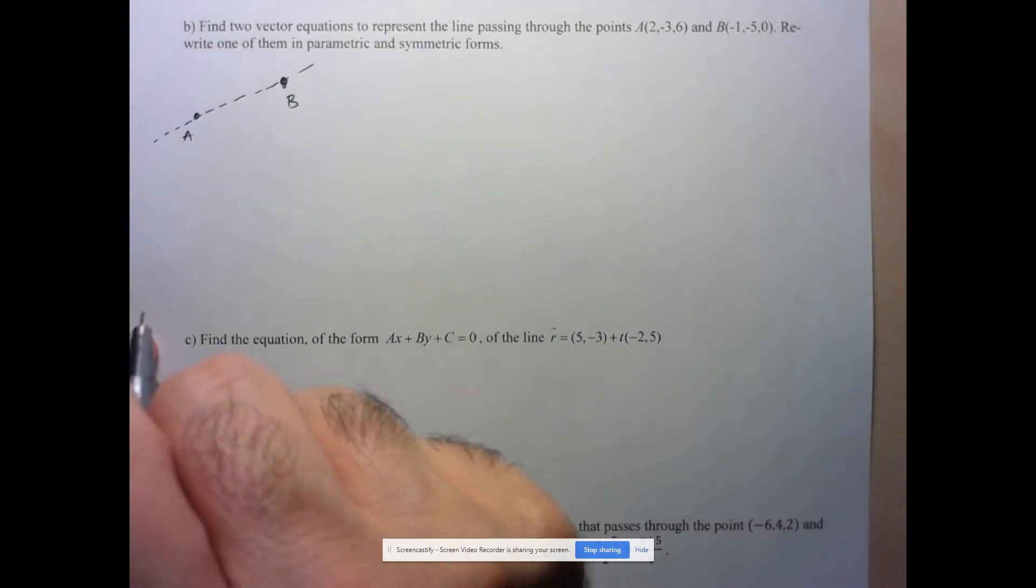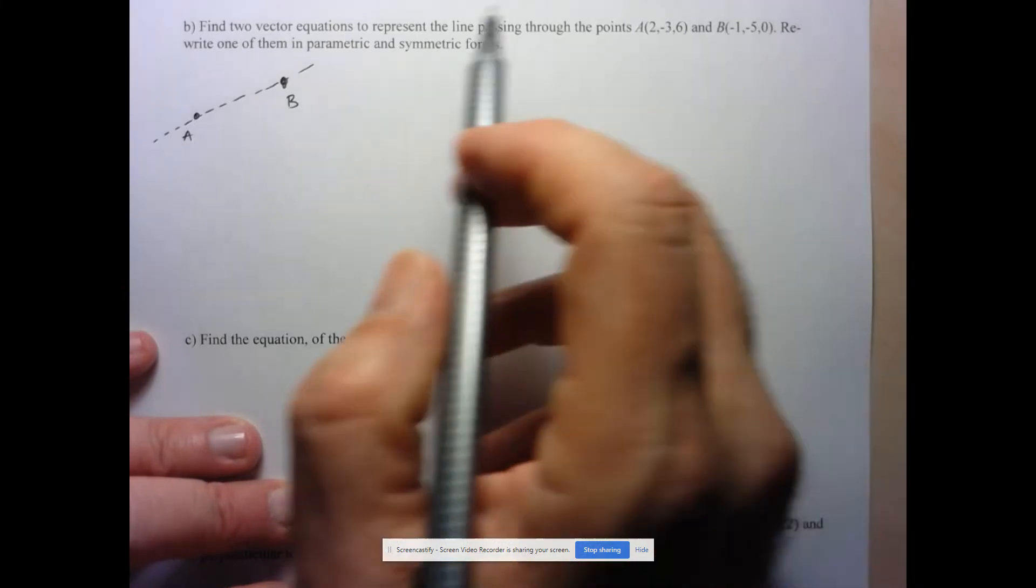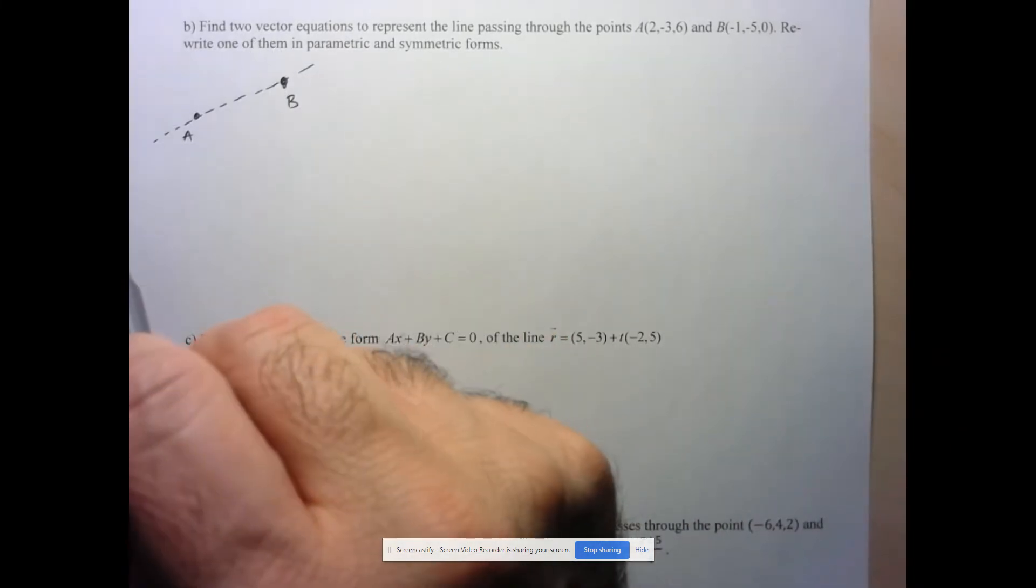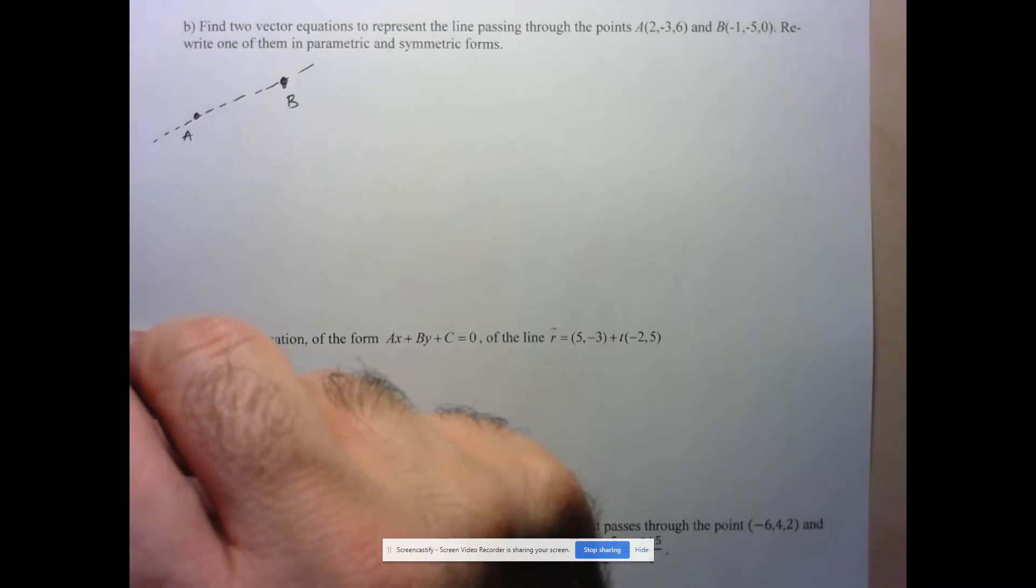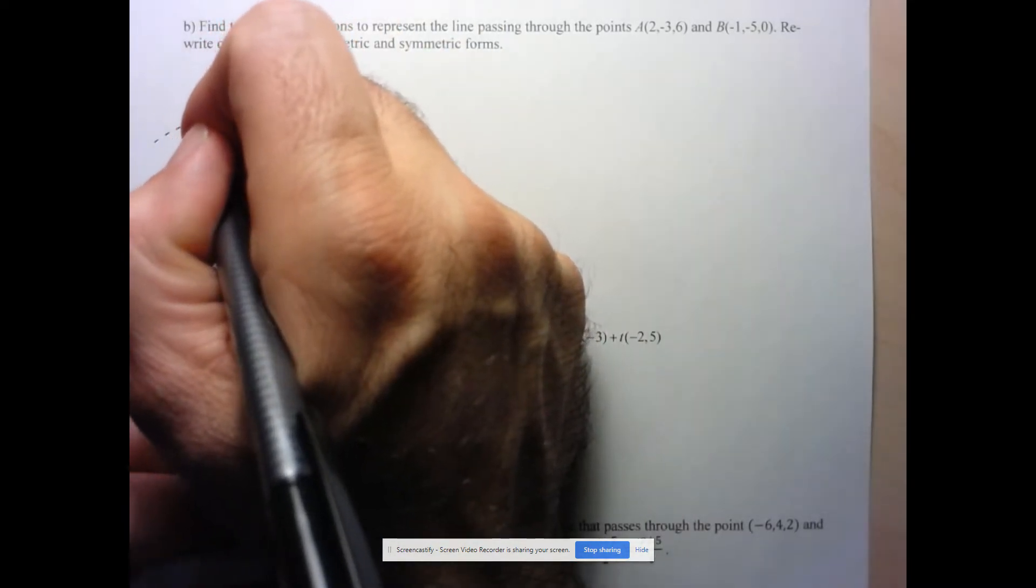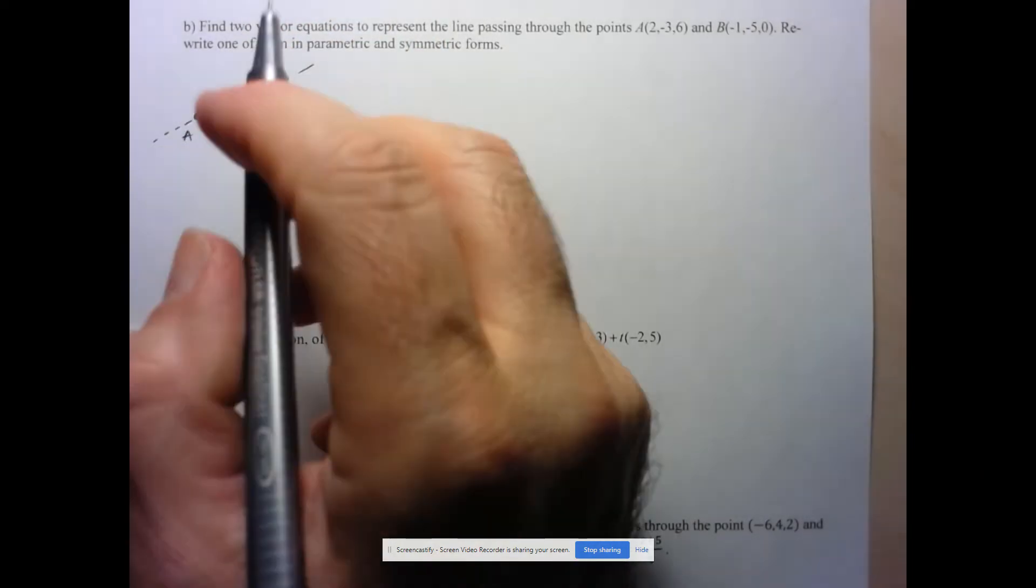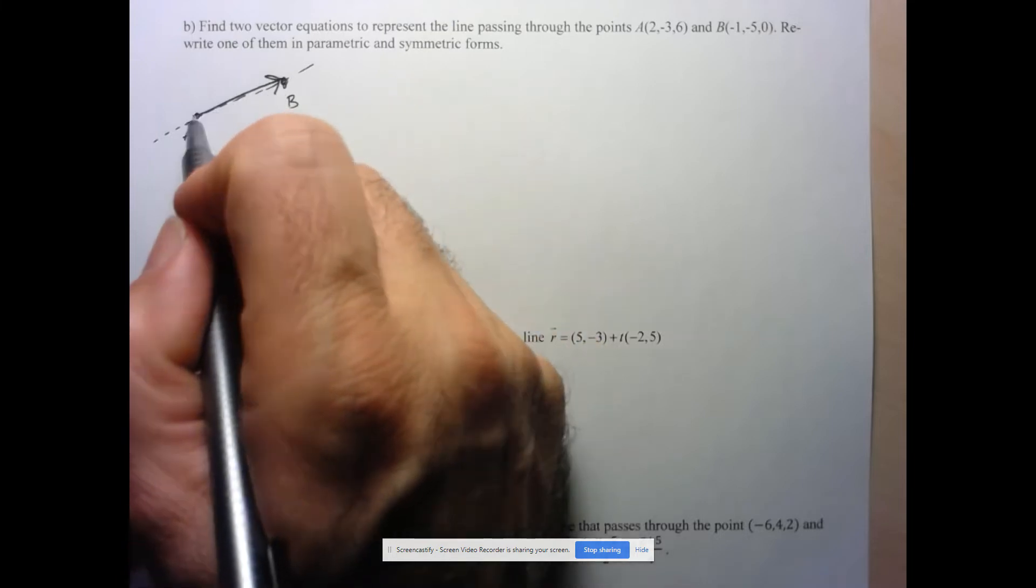So, well, in terms of points, I've got my choice. I can use either one of these points. So I can definitely use that in terms of my two vector equations. But now I have to find a vector that's in the same direction as the line. Well, I don't think you're going to be too surprised that what I'm going to do is take the vector from A to B. Of course, I could have also taken the vector from B to A. That would also be parallel to this line.